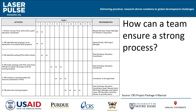A range of project management approaches and tools exist that can support this kind of effective planning for a strong process. Things like work plans, detailed implementation plans, Gantt charts, and more can also help guide teams toward a comprehensive process. Ask your partner what tools they have and like to use to plan their work.